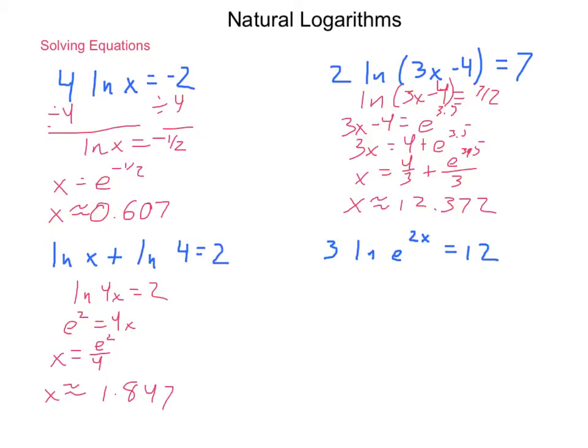Last one, 3 times the natural log of E to the 2X equals 12. And for our last one here, we have 3 times the natural log of E to the 2X equals 12. And with this, we're going to work with the property that has not been discussed previously in these videos, but does hold true for all logs. First, we're going to divide both sides by 3.